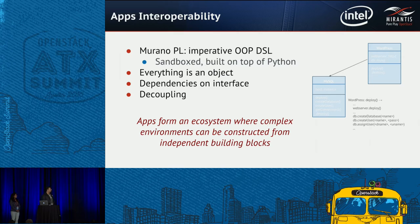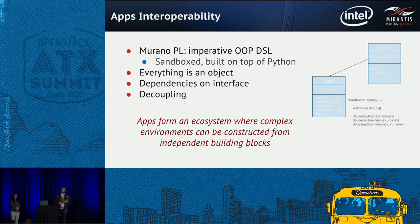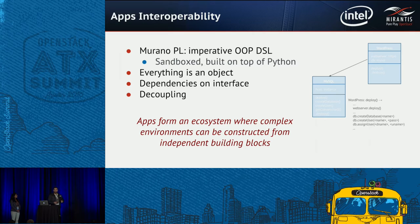A little more about the application interoperability layer. Murano PL is an imperative object-oriented domain-specific language. It's quite simple — very close to how Python and Java look, so if an application developer has experience with any object-oriented language, it will be super easy to pick up and start developing with Murano PL from day one.